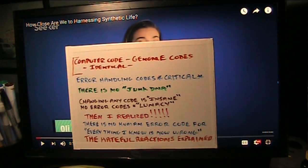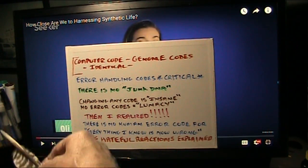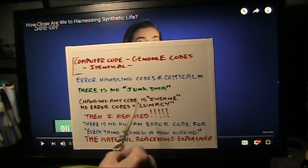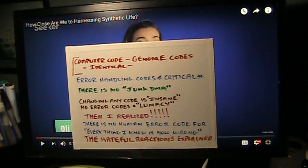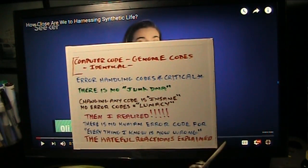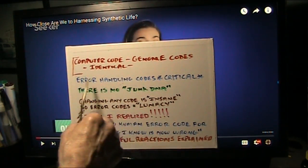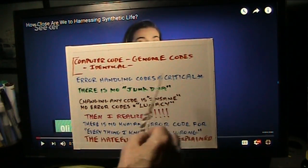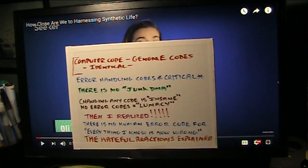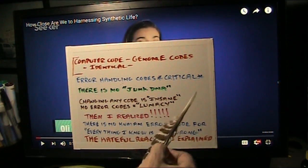Anybody that knows it is going to tell you yeah, it's a program. Something goes wrong in that program, you end up with cancer, you end up with whatever. They're trying to change the code and you cannot do it without having the error code set up ahead of time. It's absolutely critical, error handling 100 percent critical. There is no junk DNA either. It's probably there for error code handling.